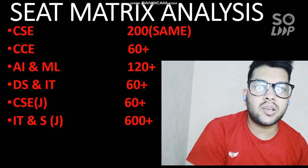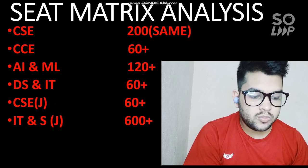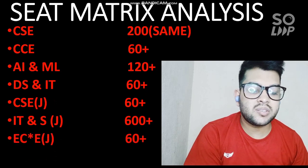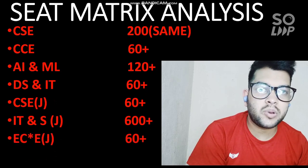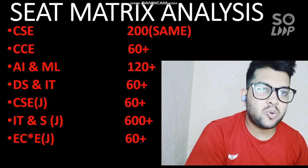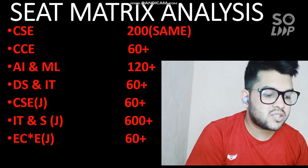If you need any type of counseling guidance, you can contact me. Next is Electronics and Computer Engineering — that is a new branch added in the Jaipur campus with 60 seats available. This covers the information regarding the seat matrix difference from 2020 to 2021.